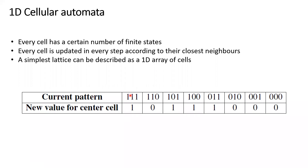What happens is that you look at the current pattern — every cell, the one in the middle, the one on the left is its left neighbor, and the one on the right is its right neighbor. If the configuration is like this, the cell in the center is going to take this value in the next generation. And this set of rules will change for different kinds of simulations or different kinds of games.